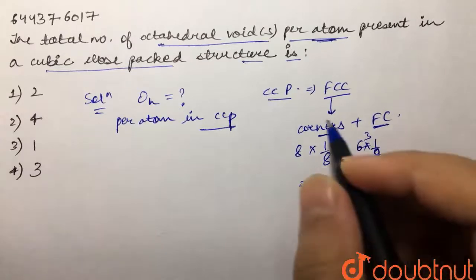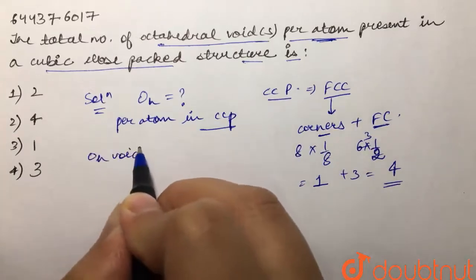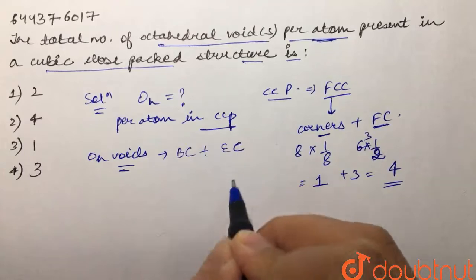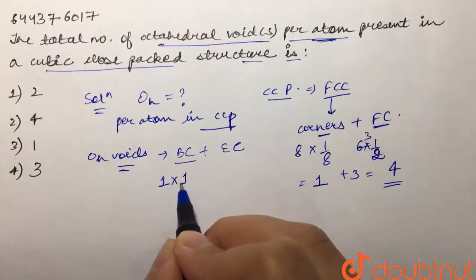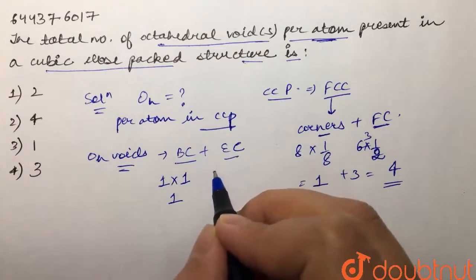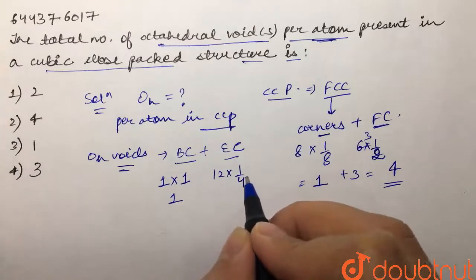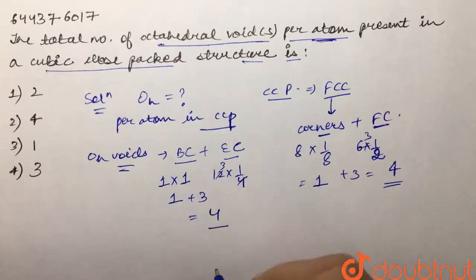And if we talk about octahedral voids, octahedral voids occupy body center plus the edge center. Now we know body center is one and has a hundred percent contribution in a unit cell, that means one. And then edge centers are 12 in number, and each has a contribution of one by four, so we get three for this. So one plus three, that means we are getting four. So we can say that we have four octahedral voids and we have four atoms in our CCP structure or our FCC structure.